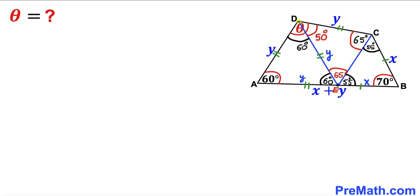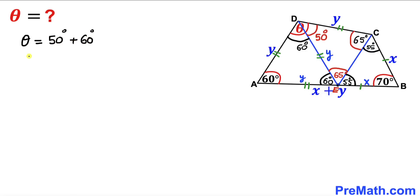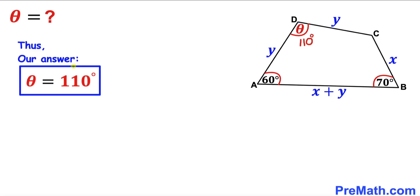For our final step, angle theta is the sum of angle ADE and angle CDE — that is 60 degrees plus 50 degrees — giving us theta equals 110 degrees. That is our final answer. Thanks for watching and please subscribe to the channel for more videos.